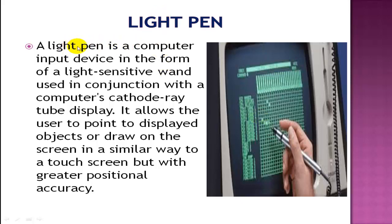Light Pen: A light pen is a computer input device in the form of a light-sensitive wand used in conjunction with a computer. It allows the user to point to displayed objects or draw on the screen in a similar way to a touch screen, but with greater positional accuracy. A light pen looks like a normal pen connected to the computer. It is used to select items on the screen and can also be moved by hand over a pad to enter drawings into the computer.